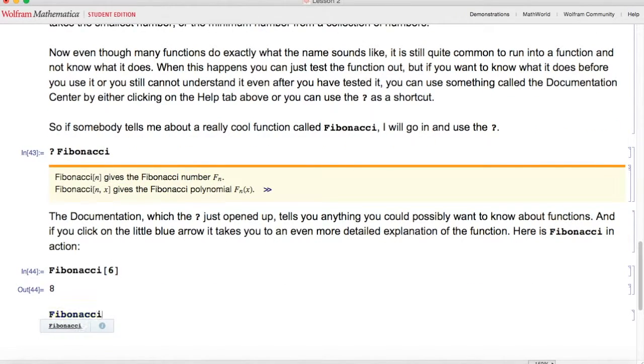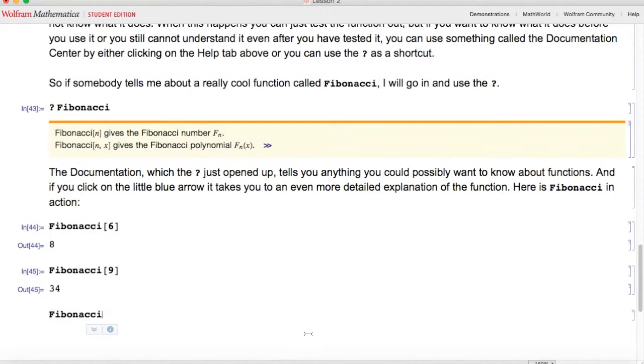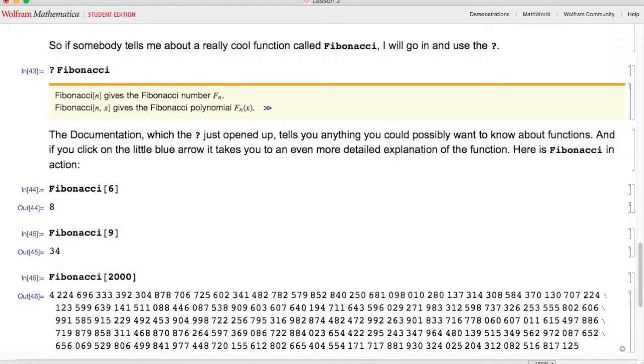Here I'm going to do Fibonacci of 9, hit shift enter and it's 34, because 34 is the 9th Fibonacci number. Here I'm going to do Fibonacci of 2,000, a much larger number. Hit shift enter and it's huge. That is because it is the 2,000th Fibonacci number.